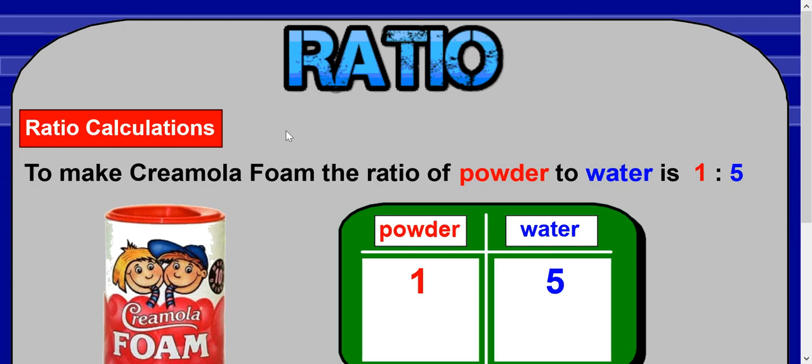In this first example, I'm going to look at how to make Creamola Foam. Now you guys probably can't remember Creamola Foam. It was around when I was a wee boy and it was this kind of powder that you put in a drink, then you put water in, it fizzed up and made some kind of fizzy juice. It was quite tasty at the time.